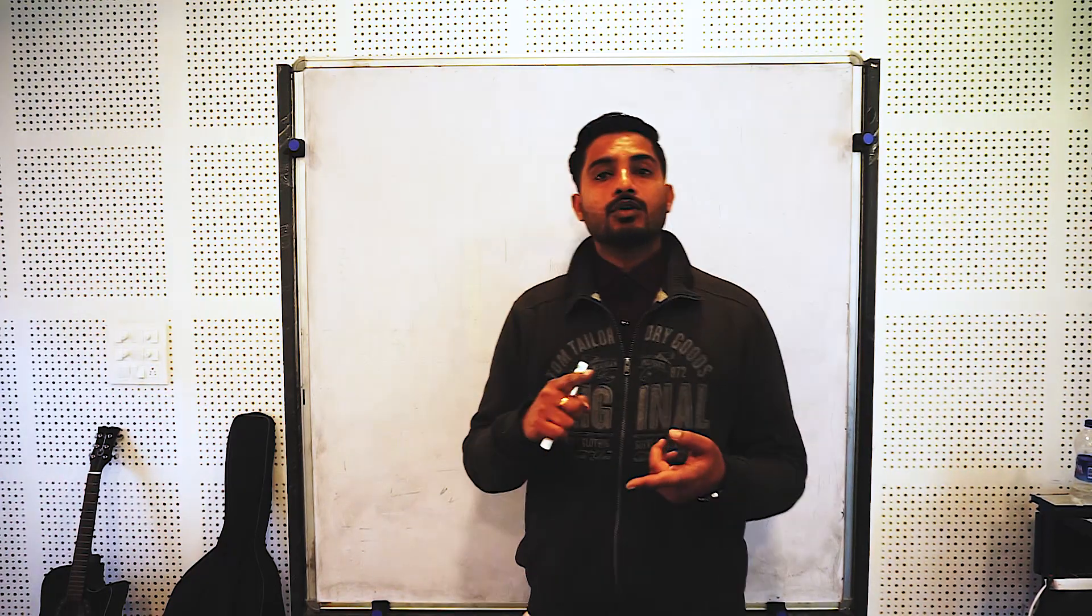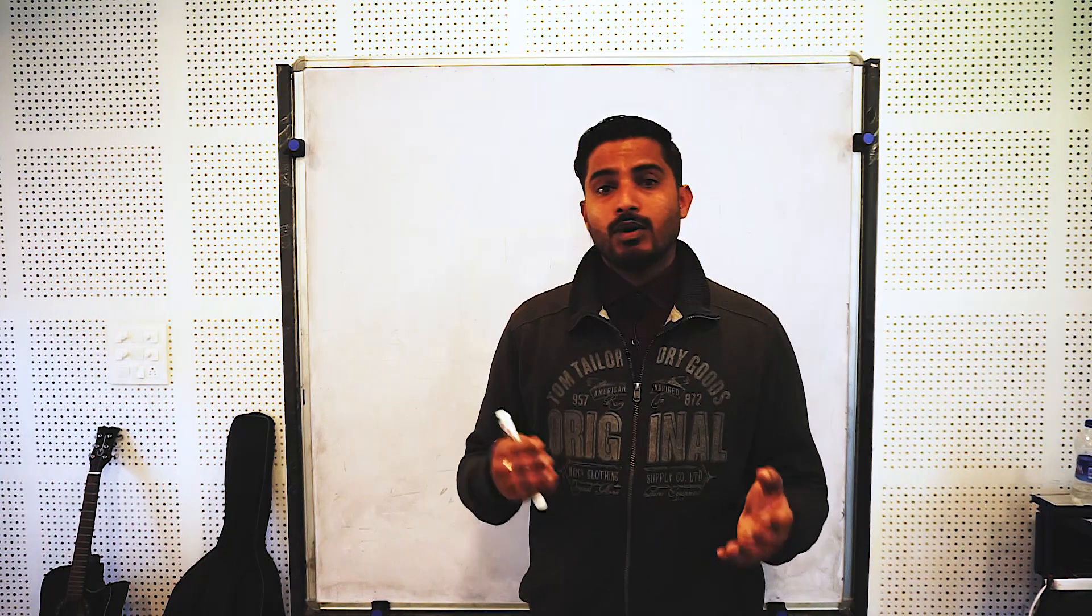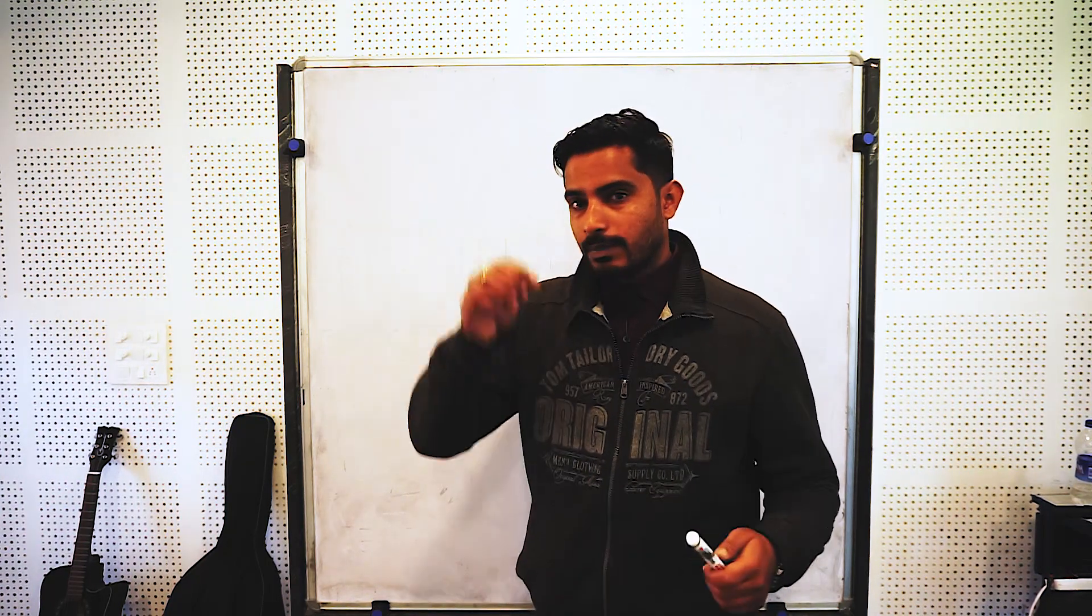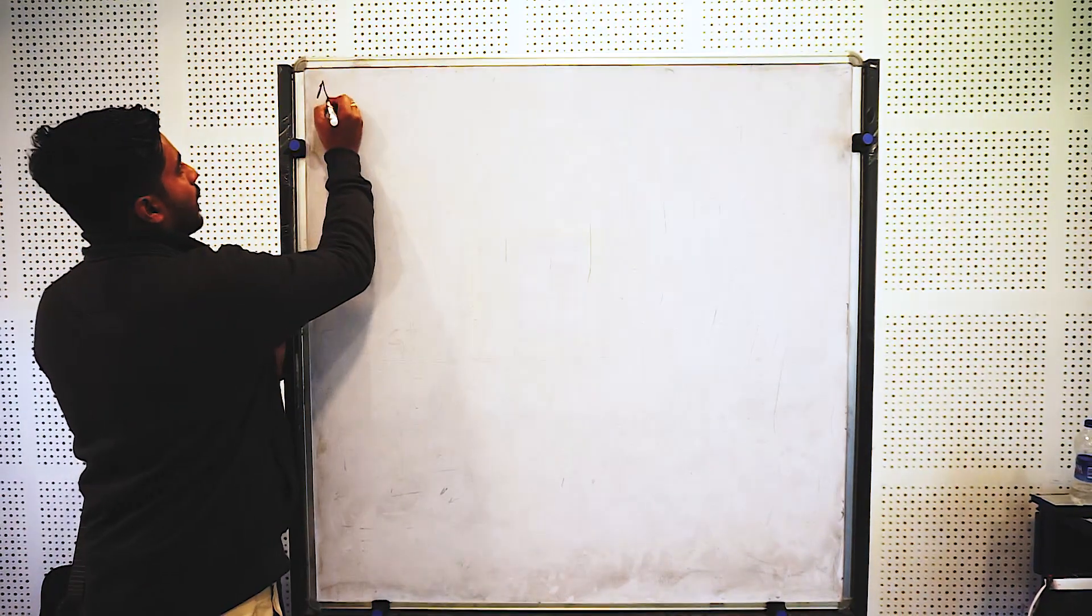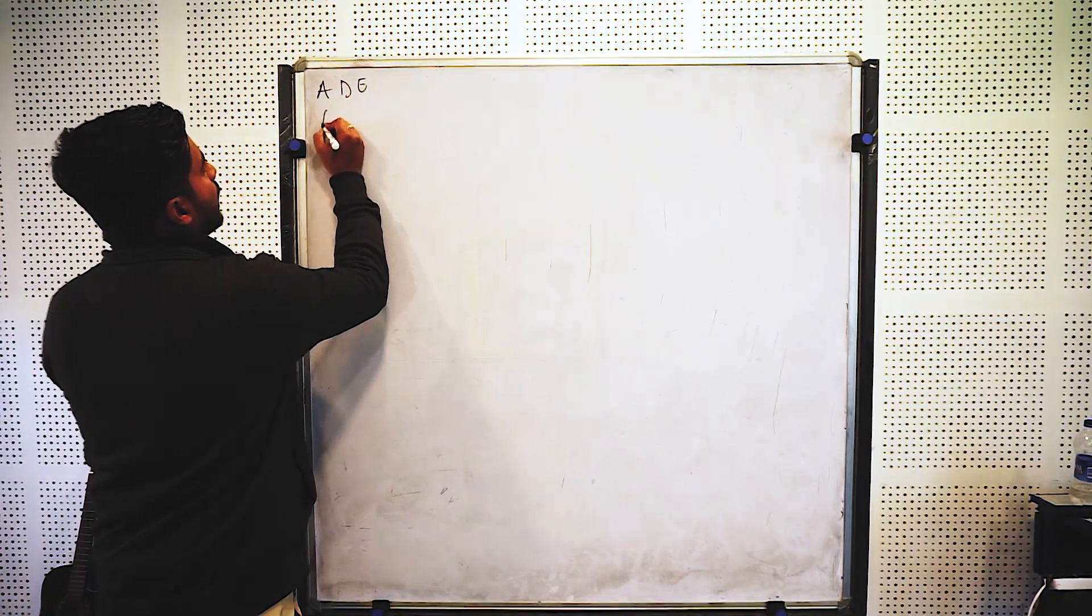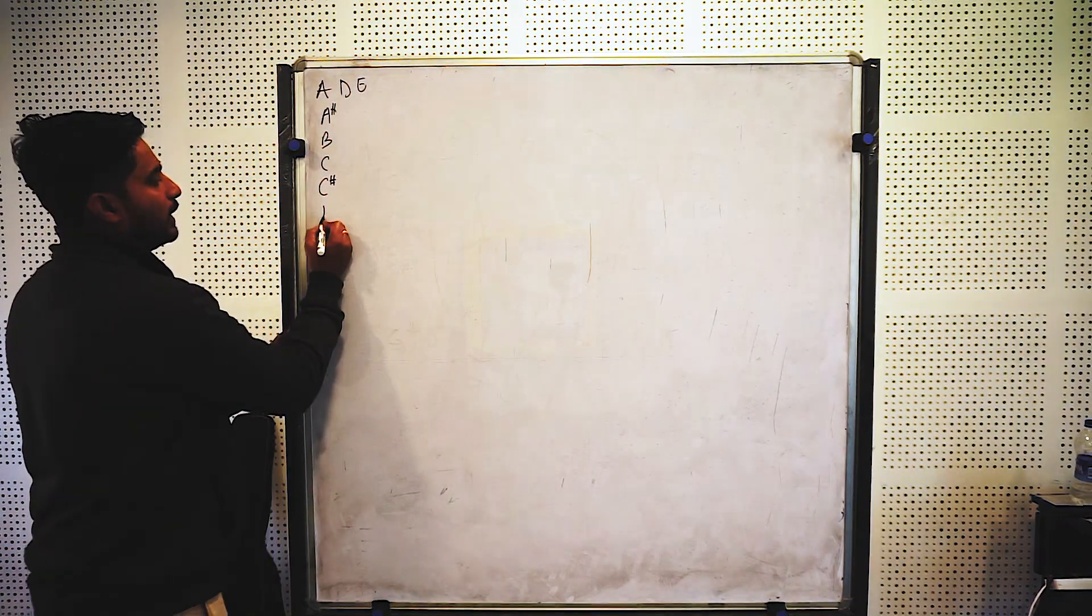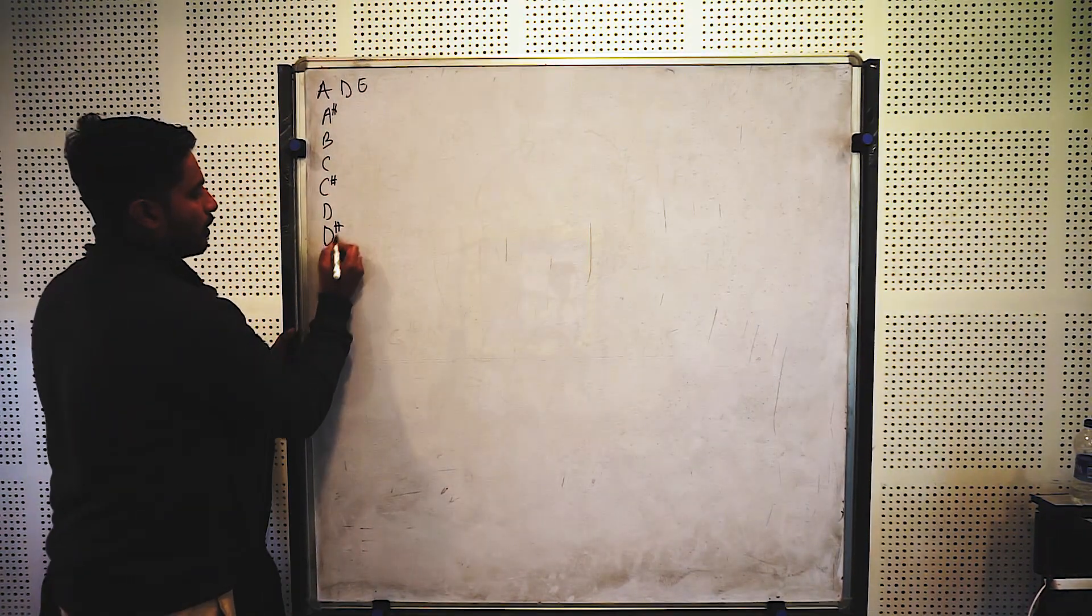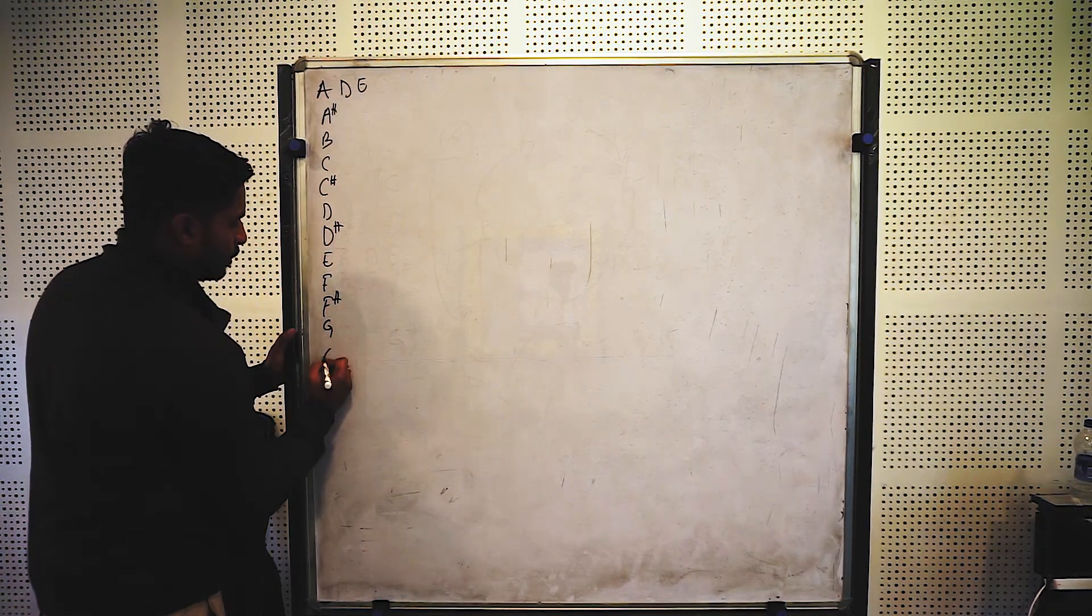First of all, you will have a combination of A, B, C, D, E, F, G with sharps. So, first of all, we will list out the notes. For example, let's see: A, A sharp, B, C, C sharp, D, D sharp, E, F, F sharp, G, G sharp.